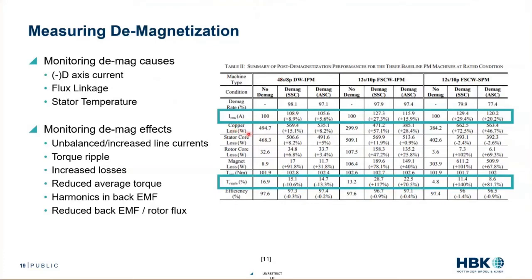You can monitor copper losses, but that's calculated — you increase measurement uncertainty. Current directly is a direct measurement. That's a really easy measurement to make over time and start to look at: is this creeping up, even for a very small amount of demagnetization?